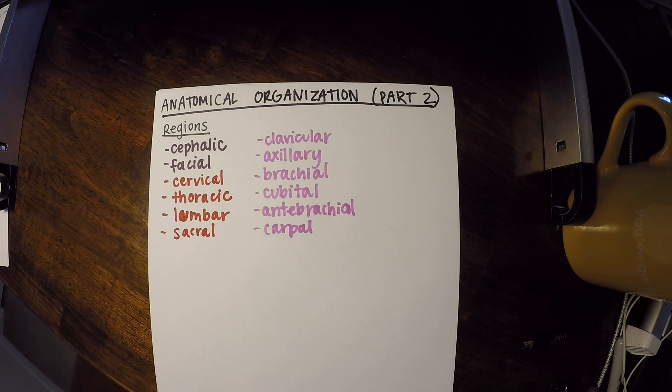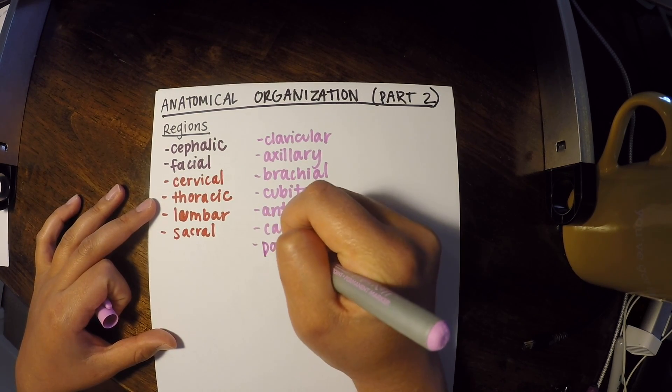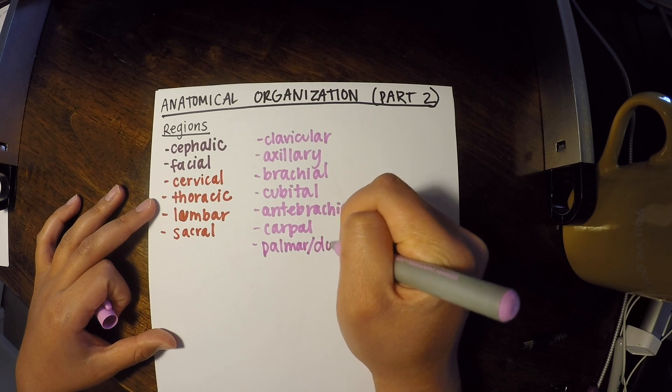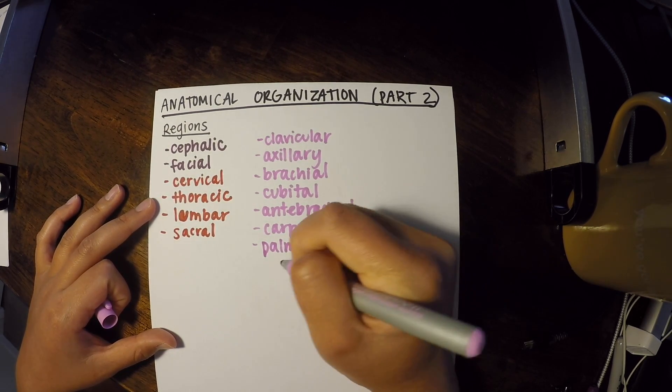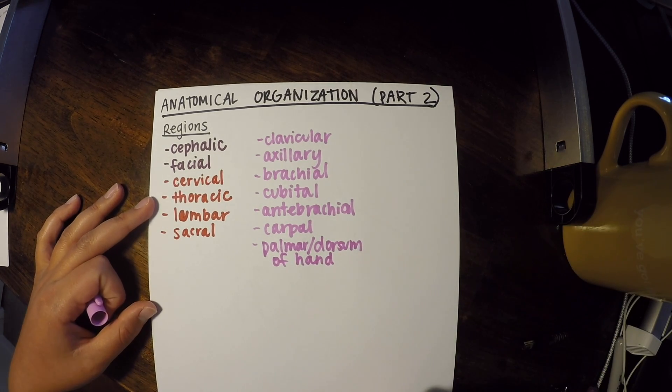And then we also have the palmar surface and the dorsum. So we have the palmar and the dorsum of the hand. So that's all your upper body stuff.